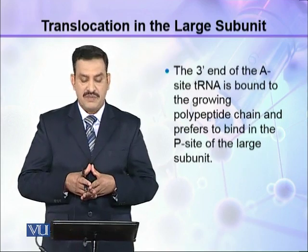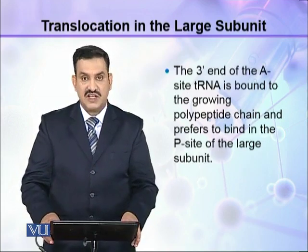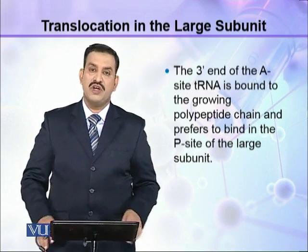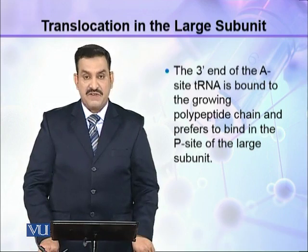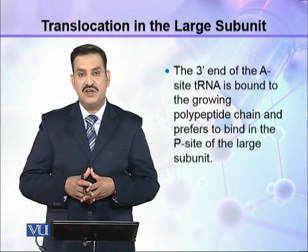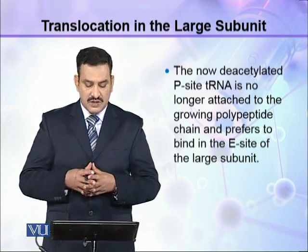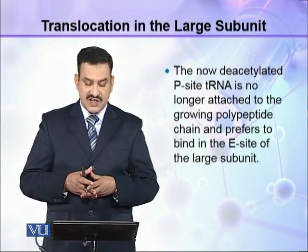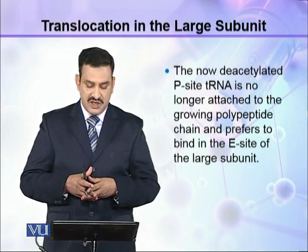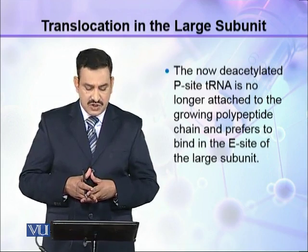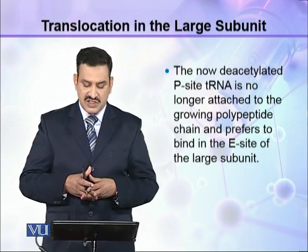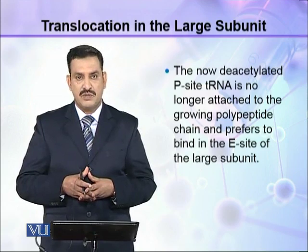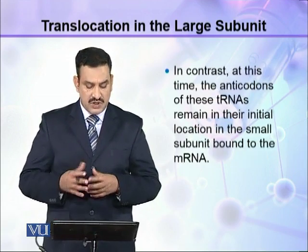The 3' end of the A-site tRNA, which is bound to the growing polypeptide chain, prefers to bind in the P-site of the large subunit. The now deacylated P-site tRNA is no longer attached to the growing polypeptide chain and prefers to bind in the E-site of the large subunit.